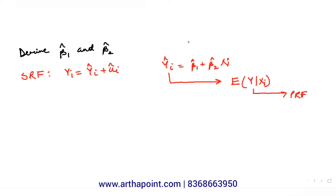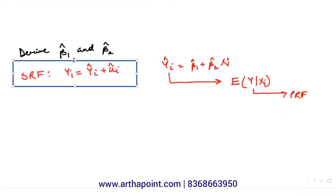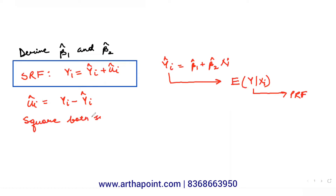The sample regression function can be written as yi = yi hat + ui hat. From here, we can say that ui hat = yi minus yi hat. Let us square both sides.